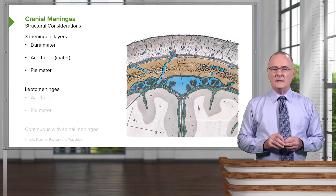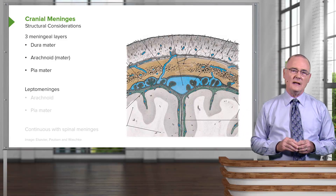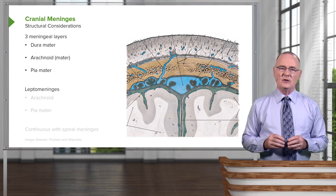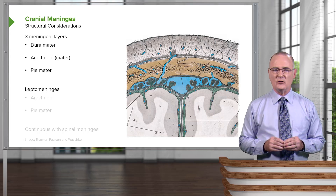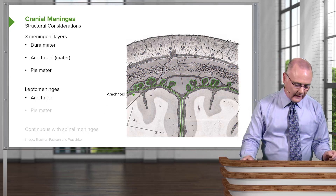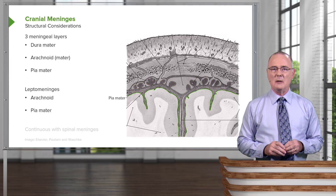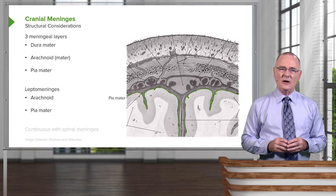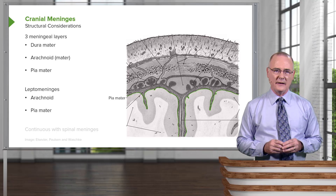At this point, it will serve us well to define the leptomeninges. The leptomeninges comprise the innermost two layers of the meninges — the arachnoid layer, again shown in green, as well as the pia mater. With meningitis, these are the layers that would be involved in this inflammatory state.